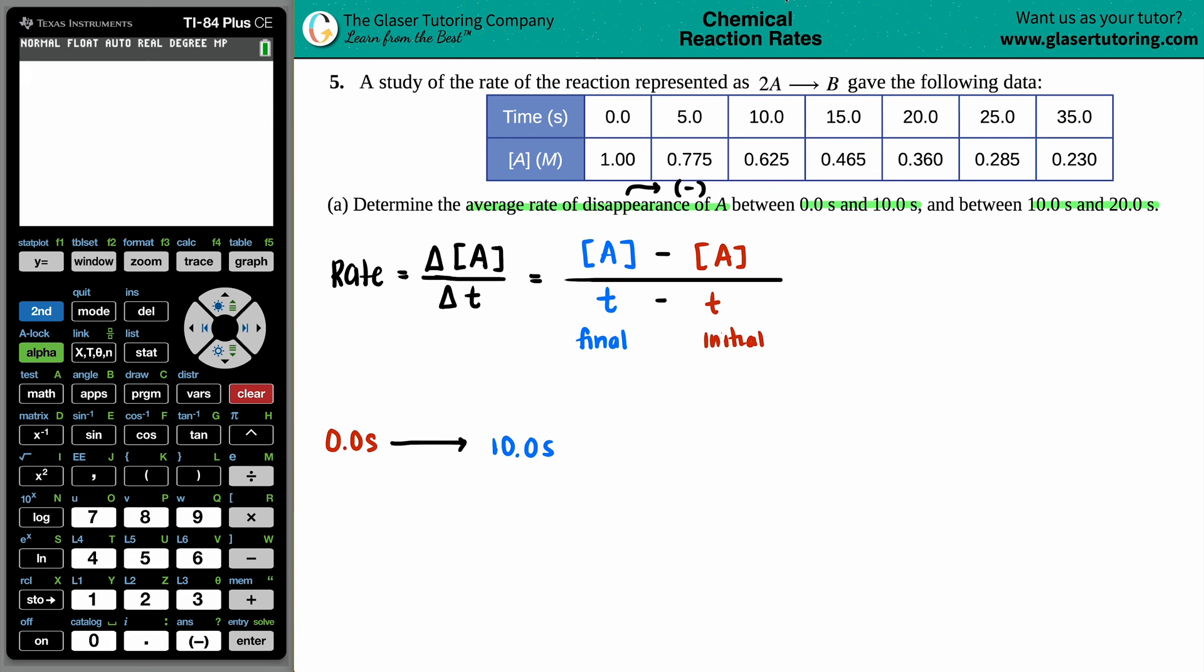Looking at our chart, at 0 seconds my concentration of A is 1.00 molarity, and at 10 seconds the concentration is 0.625 molarity. We have our two values - initial and final. The rate equals final minus initial: Rate = (0.625 M - 1.00 M) / (10.0 s - 0.0 s).